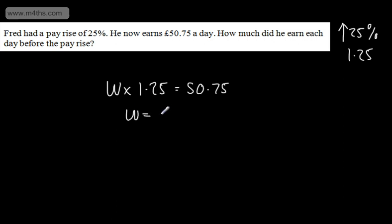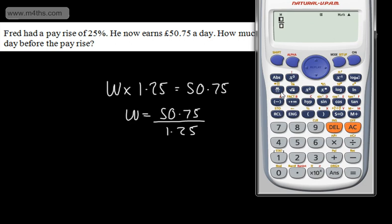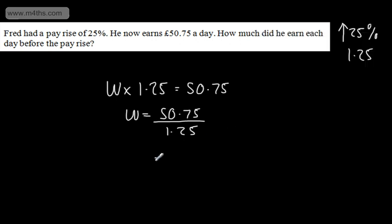So his wages before were £50.75 divided by 1.25. Again, a common error is to find 25% of this and subtract it. So let's go ahead and do that. So £50.75 divided by 1.25, and that is going to give us now £40.60. So we can write £40.60. So that's what he earned before his pay rise. So as you can see the last ones, the price was going down. This time, the value of what he's earning is going up.